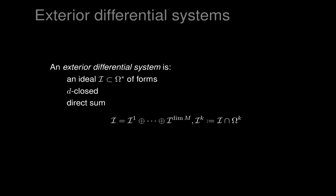We can also assume the ideal is a direct sum of its components in different degrees — one-forms, two-forms, and so on — because if a sum of a one-form and a two-form vanishes on a surface, then the individual components already vanish. So an exterior differential system is an ideal of forms which is closed under exterior derivative and is a direct sum of its forms in each individual degree.